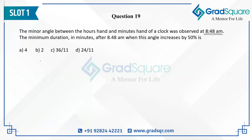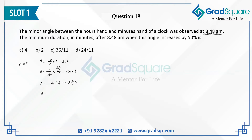We know that the angle is always given by (11/2)m minus 30h. So instead of minutes you put 48, and for h you put 8. So theta is equal to (11/2) into 48 minus 30 into 8. This gives 11 into 24 equals 264, minus 30 into 8 which is 240. So the angle between the hands of the clock at 8:48 am is simply 24 degrees.